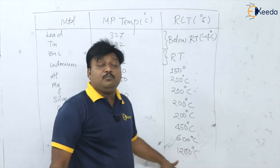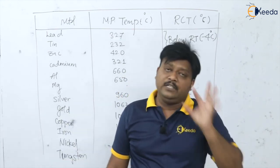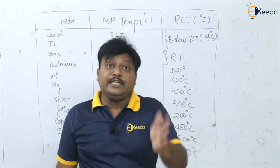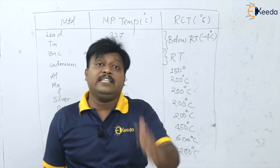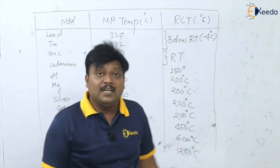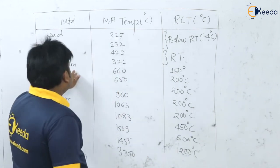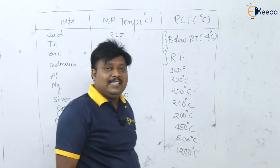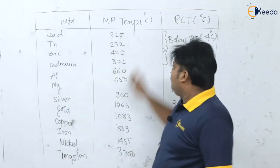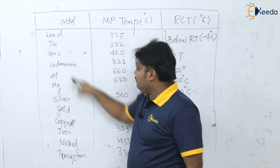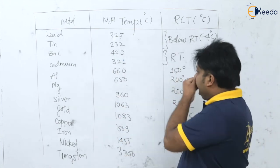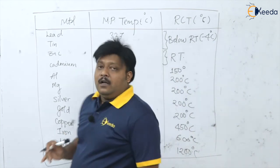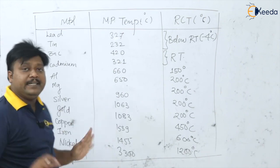Note the special cases: the recrystallization temperature of tungsten is 1200°C. This means that even if you work tungsten at 1100°C, it is still treated as cold working, since 1100°C is below its recrystallization temperature of 1200°C. You should keep in mind these special cases for lead, tin, zinc, cadmium, and tungsten.